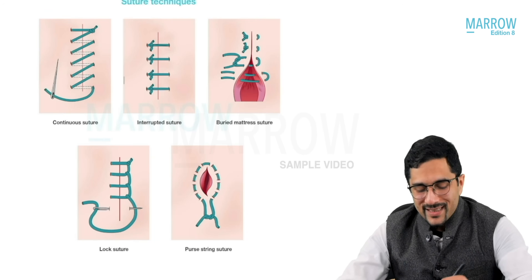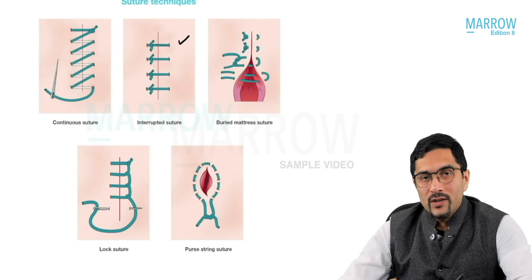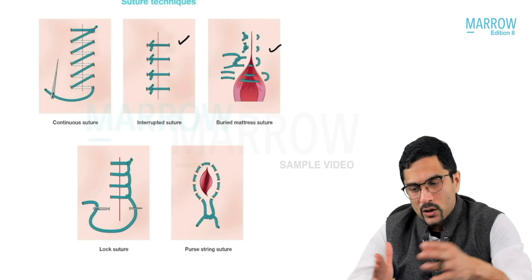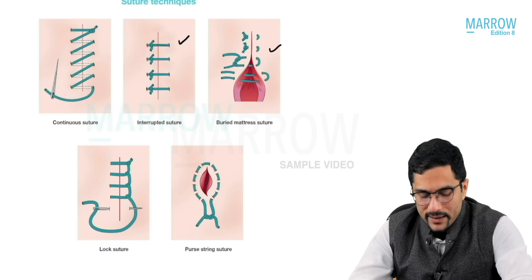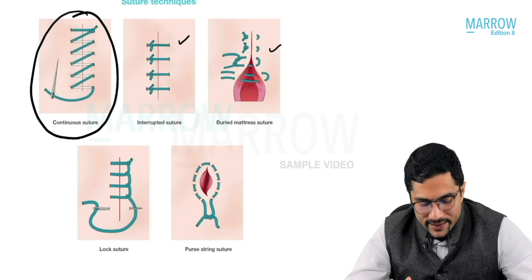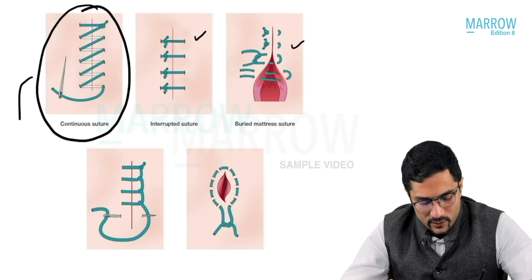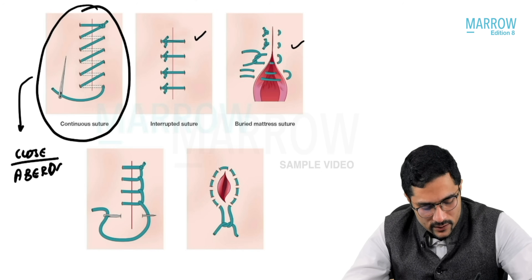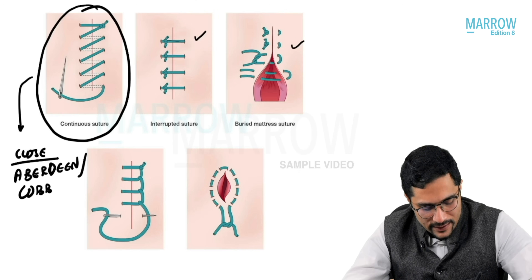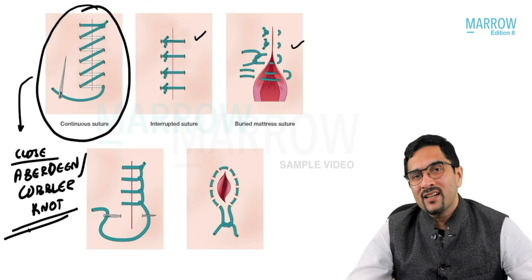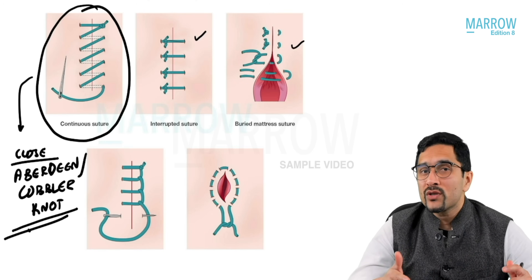Other suture types: interrupted sutures are like simple sutures. Buried mattress sutures also help in closure, similar to a mattress suture. A continuous suture involves taking continuous bites. When closing a continuous suture, we use an Aberdeen's knot or cobbler's knot at the end — a skill used when suturing an episiotomy in gynecology or closing an abdomen in surgery.